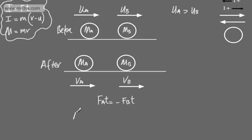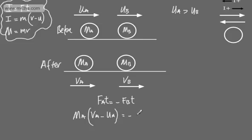Looking at FAT and minus FBT, we can see that looks like impulse. Using the definition of impulse — impulse is force times time — FAT can be written as MA multiplied by VA minus UA. And that will be equal to minus FBT, which using the second definition of impulse gives minus MB multiplied by VB minus UB.